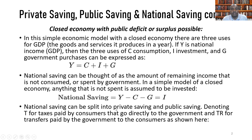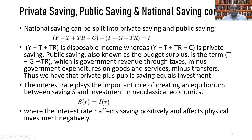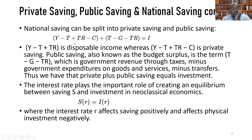National saving can be split into private saving and public saving. Denoting T for taxes paid by consumers that go directly to the government, and TR for transfers that the government pays to consumers, private saving is Y minus T — which is disposable income — plus TR, which are transfers that add to disposable income, minus C, household consumption expenditure.